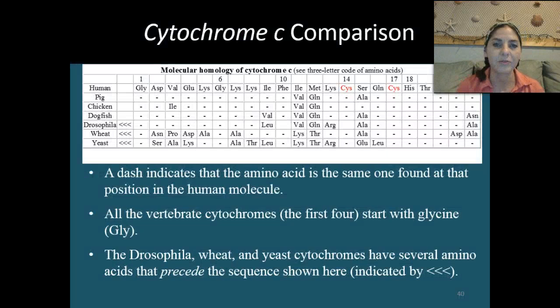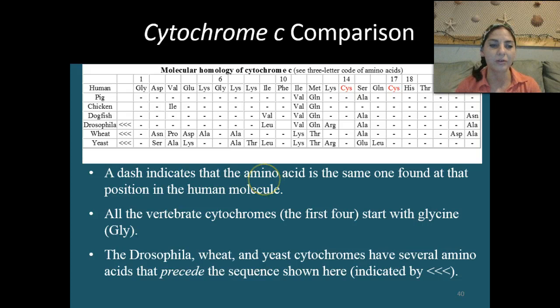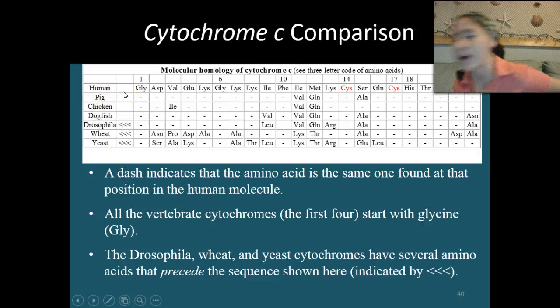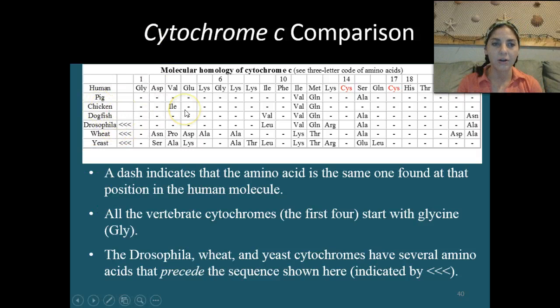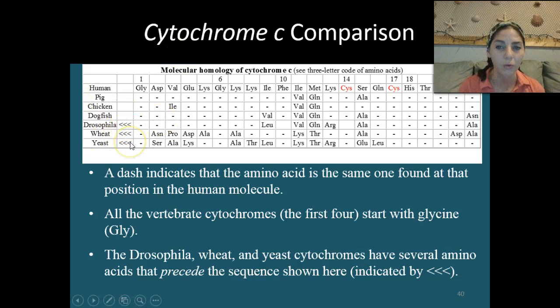Looking at the cytochrome C comparison, a dash indicates the amino acid is the same as the one found in the human molecule. All vertebrate cytochromes — the first four: human, pig, chicken, and dogfish shark — are going to have the same first four amino acids starting with glycine. Drosophila (fruit flies), wheat, and yeast cytochromes also have several amino acids that precede that, shown by the arrows here. This shows the number of mutations that occur across species.